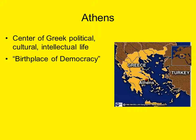Athens was a major center of Greek political, cultural, and intellectual life, continuously inhabited for over 3,000 years. By the 4th century BCE there were about 300,000 inhabitants in Athens. It is often referred to as the birthplace of democracy, as democratic traditions emerged here, although they were significantly different from modern democracy. Women, for example, could not vote, and less than half of all adult Athenian males were eligible to vote.